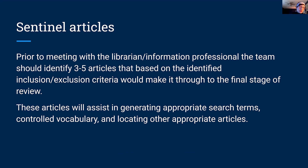As you were doing sample searches when writing the protocol, you want to identify what we call sentinel articles. These are articles that, as you were doing your search, you've identified as something you would potentially include — that would make it through the inclusion-exclusion criteria to the final stage of review. Having those articles and providing them to the librarian who's helping with the search piece is really going to help to get those search terms, controlled vocabulary, and even locating other appropriate articles through their bibliographies. Those articles can be really, really important and helpful as you go into the literature search stage.